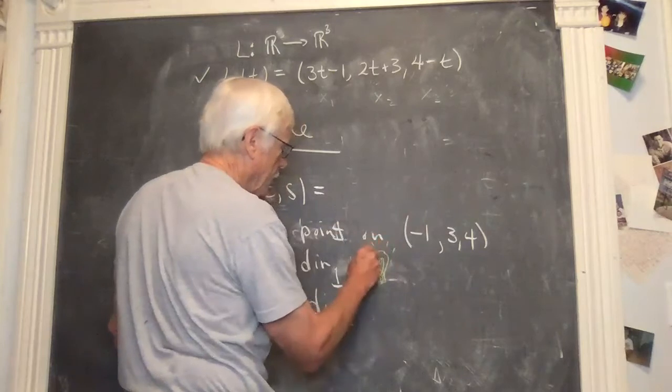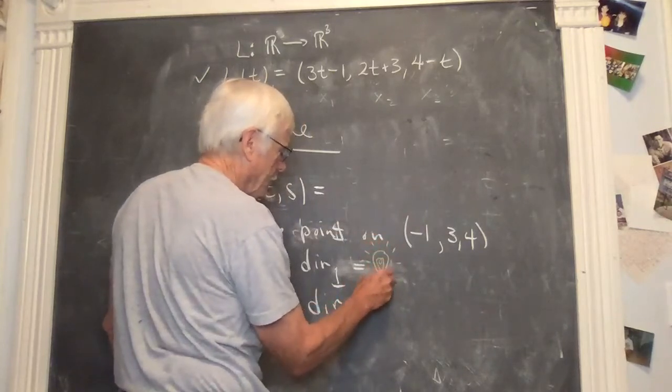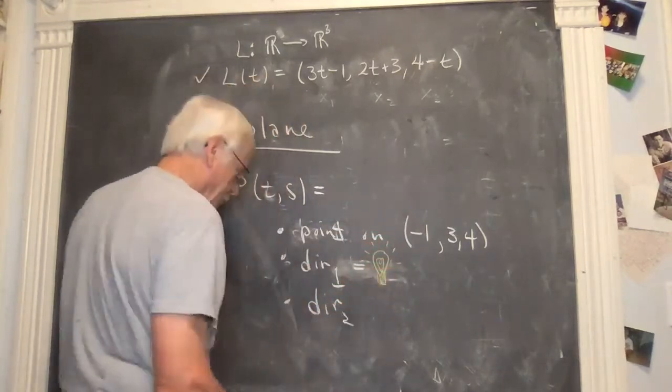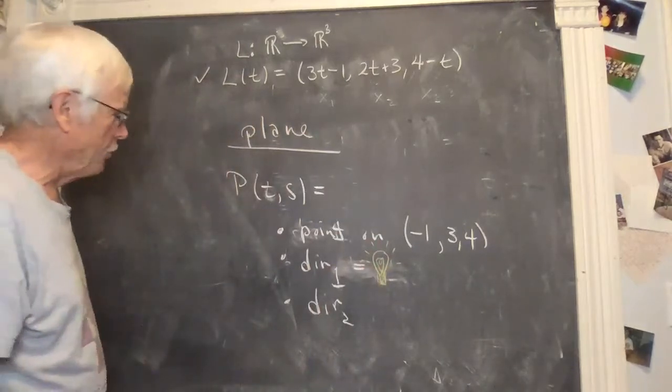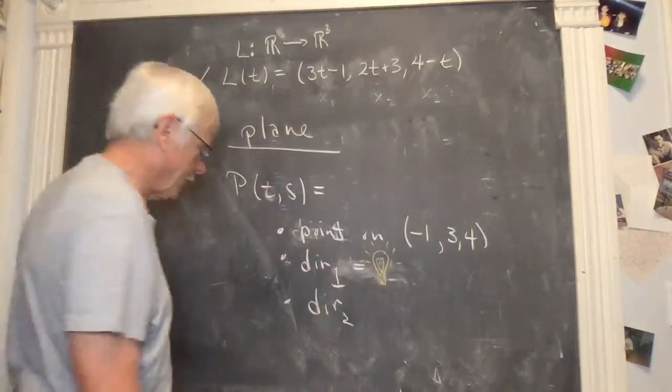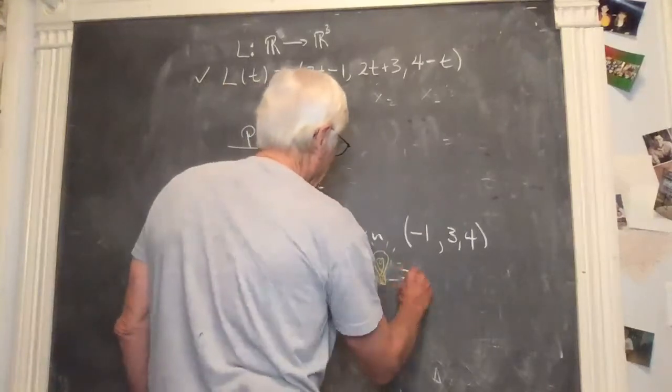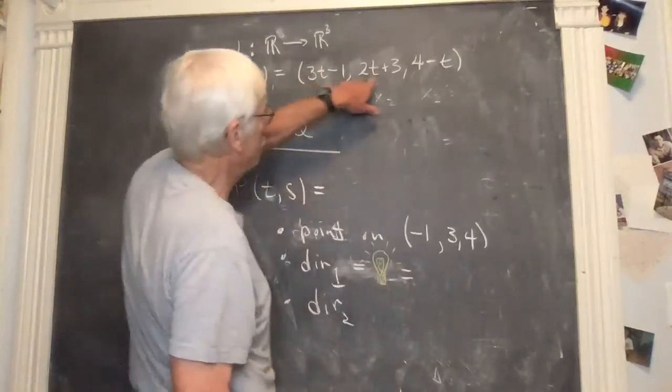Does anybody know what this is anymore? This is an old white bulb. Incandescent white bulb. Part of my repertoire I'm going to have to change. Anyway, dir one is, the direction here is three, two, minus one.